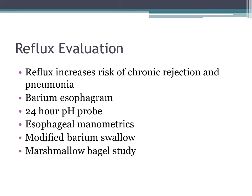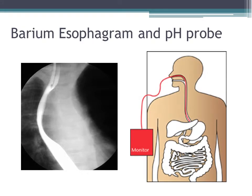Esophageal manometrics will determine the strength of your esophagus and the muscles in your lower and upper esophagus that prevent reflux. A modified barium swallow will determine whether you have any difficulty with swallowing, and a marshmallow bagel study will determine whether you are able to advance food and pills into your stomach after a swallow. This slide depicts a barium esophagram and a schematic of a 24-hour pH probe, which measures the pH in your esophagus to determine whether there is significant acid reflux that needs to be addressed during or after your transplant.